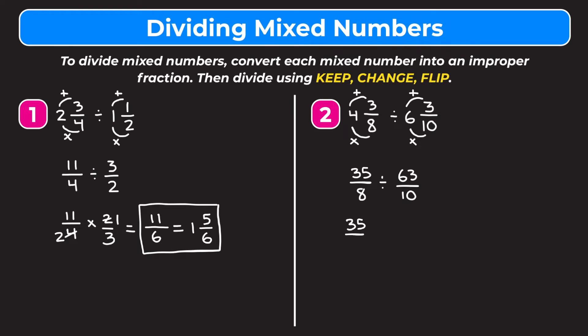Now keep change flip: keep thirty-five eighths, change division to multiplication, flip sixty-three tenths to become ten over sixty-three. We can cross-reduce thirty-five and sixty-three by dividing both by seven — thirty-five divided by seven is five, sixty-three divided by seven is nine. We can also cross-reduce eight and ten by dividing both by two — eight divided by two is four, ten divided by two is five.